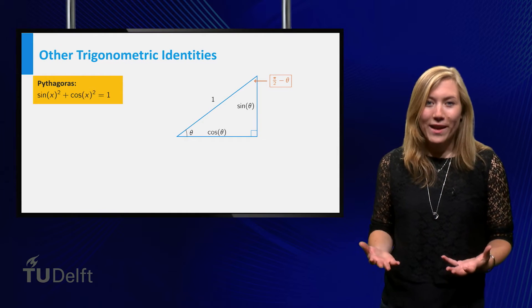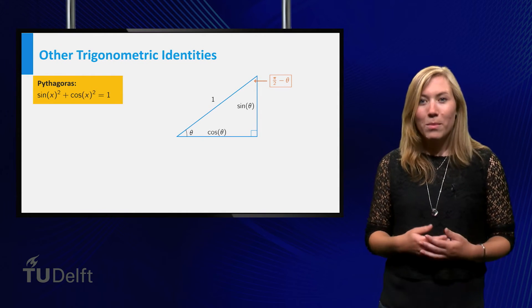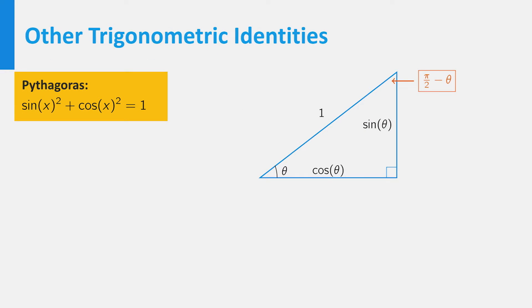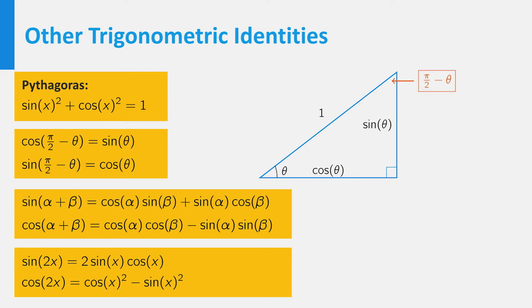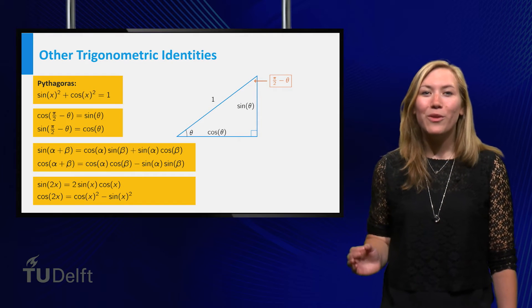Other important formulas for the trigonometric functions are sine of x squared plus cosine of x squared equals 1, which follows from the theorem of Pythagoras. You also learned how to transform a sine into a cosine, and vice versa. You also recall the addition and doubling formulas. They can be very convenient to solve equations.